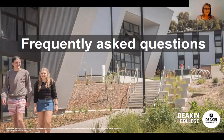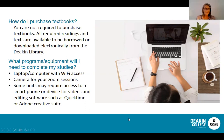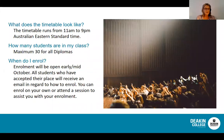Some frequently asked questions: You are not required to purchase any textbooks for the Diploma of Communication — all required readings and texts are available to be borrowed or downloaded electronically from the Deakin Library. The programs and equipment you will need include a laptop or computer with Wi-Fi access, a camera for your Zoom sessions which can be built into your computer or on your phone. Some units may require access to a smartphone or device for videos and editing software such as QuickTime or Adobe Creative Suite. The timetable runs from 11am to 7pm Australian Eastern Standard Time.